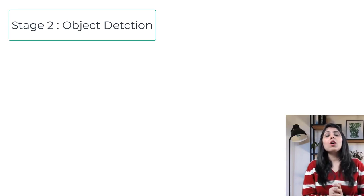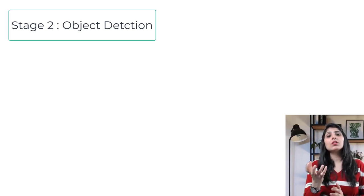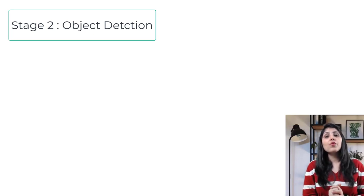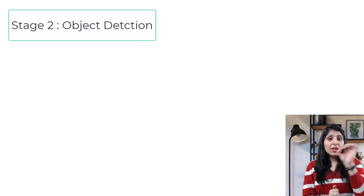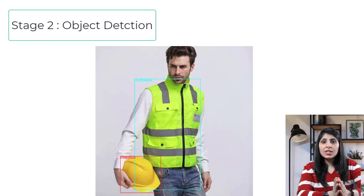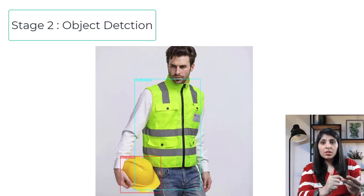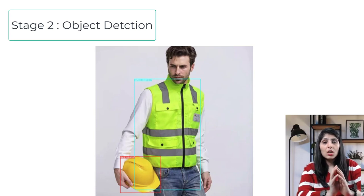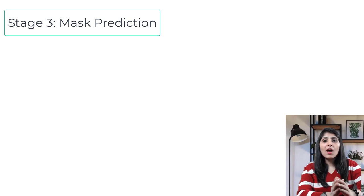In the first stage we got all regions from the images where objects are present. In the second stage - object detection - we provide bounding boxes and class labels to each object. This stage takes feature maps from the ROI and predicts bounding boxes and class labels for each region proposal, similar to the classification and regression tasks in Faster RCNN.